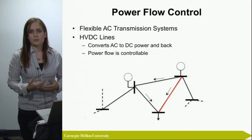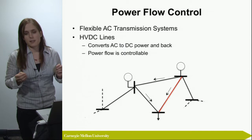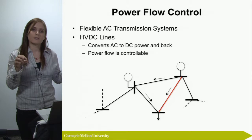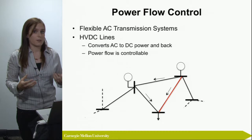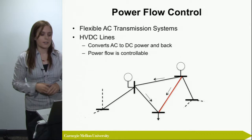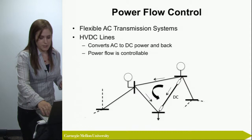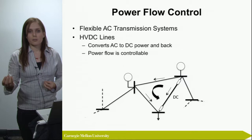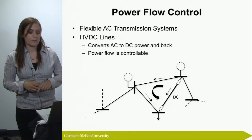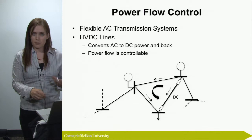Another device for influencing power flows is HVDC lines. With HVDC, you convert power at one location into DC and then convert it back to AC at the other end of the line — the traditional power system is based on AC, which is why the conversion is needed. The advantage is that you can decide how much power you want to transmit over that line. This allows you to reroute power over the rest of the system, making power flow controllable.